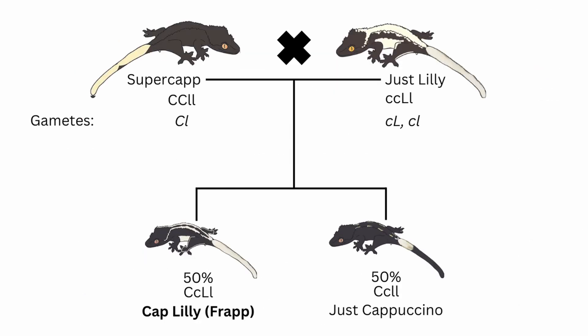This is a theoretical pairing that I did with a super cap to a just lily-white. I don't think that super caps can breed because some of them don't even reach adulthood — they die due to reduced nostril size and other health issues. Therefore, I don't think most super caps can breed, but if you could breed a super cap to a just lily-white, half of the kits would be frappuccinos and the other half would be just cappuccinos. If the super cappuccino parent was healthy and could breed, I would consider this an ethical pairing since the fraps and caps should not have health issues — though maybe since one parent is a super cap the kits might inherit some issues, but I don't think so because those issues are linked to having two copies of the gene, not just one.